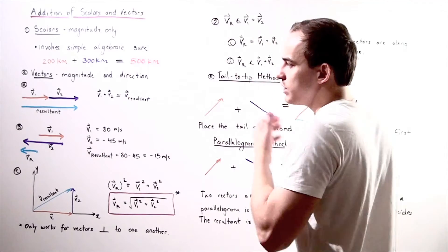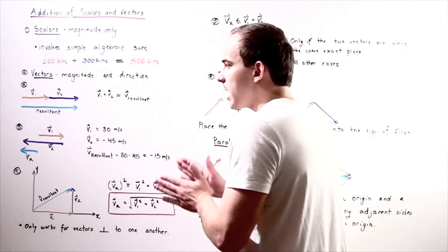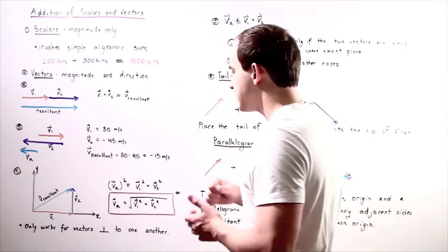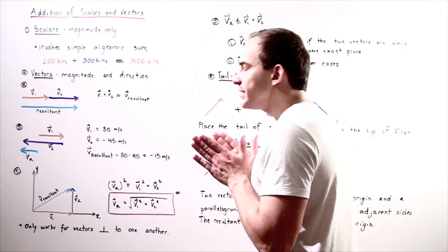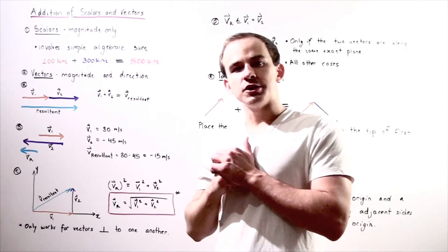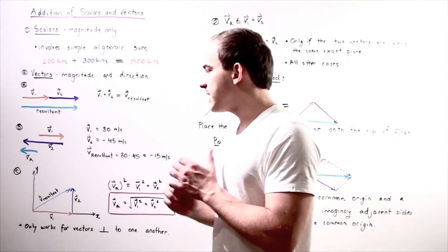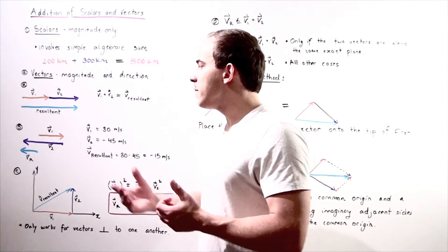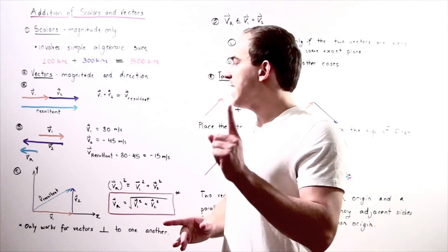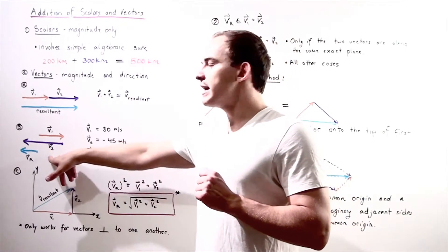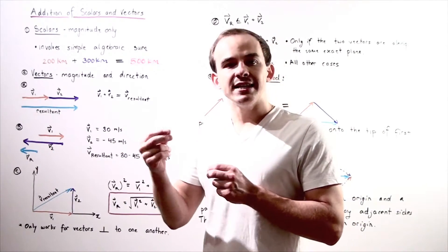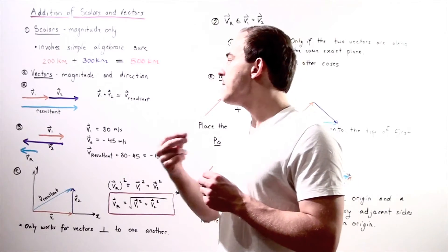Now let's look at Case B. Let's suppose that our vectors are still pointing along the same axis — the x-axis — but now vector 2 is pointing in the opposite direction. In this case, we still add up vector 1 and vector 2, but we have to keep in mind that vector 2 is in the opposite direction, so it has a negative sign in front of the magnitude.